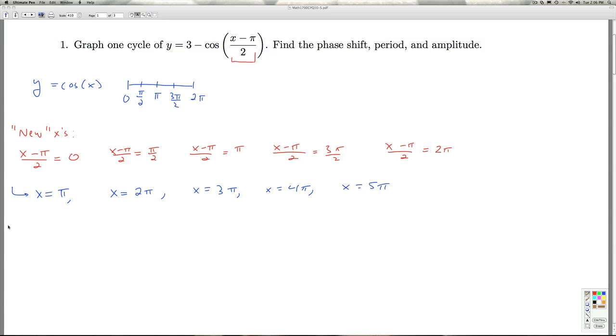Next step is to find the new y's. And the way we do that is we take each of these x's and plug it into our equation. So for x equals π, I get y equals 3 minus the cosine of π minus π/2. And if we've done our arithmetic correctly, the argument of the cosine function should always simplify to one of these original five quarter marks. So in this case, I get 3 minus the cosine of 0, which is 2.